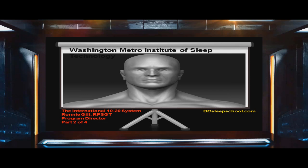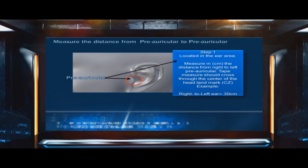Washington Metro Institute of Sleep Technology — the International 10-20 System Overview, Part 2. Measure the distance from preauricular to preauricular. The preauricular point is located in the ear area, as shown. This is where you will start your measuring tape. Measure in centimeters the distance from right to left preauricular. Your tape measure should cross through the center of the head at landmark CZ. Example: right to left preauricular equals 30 centimeters.